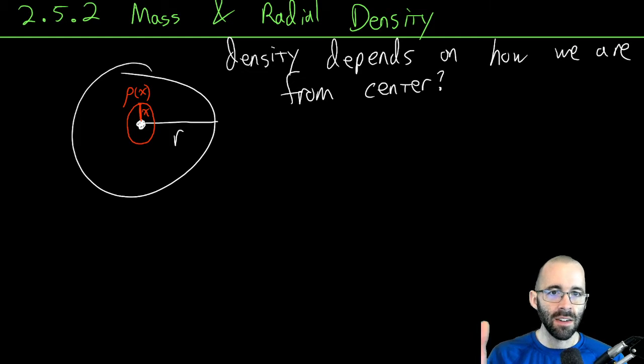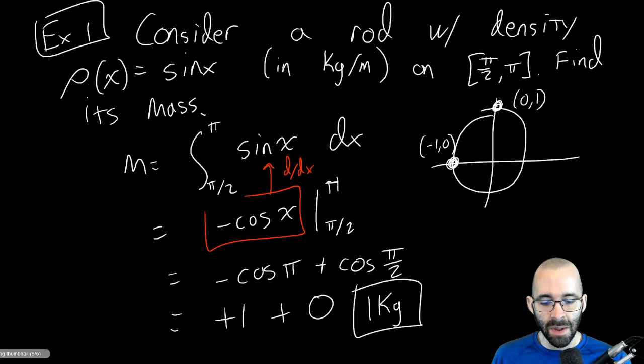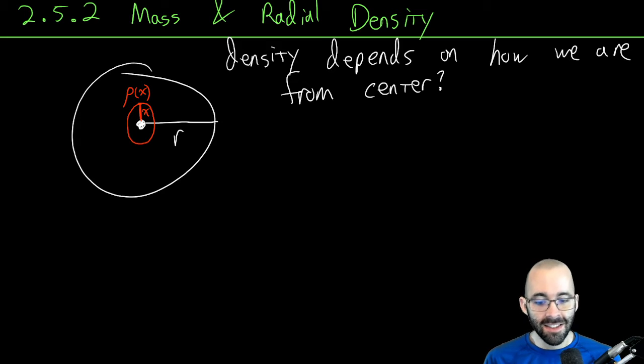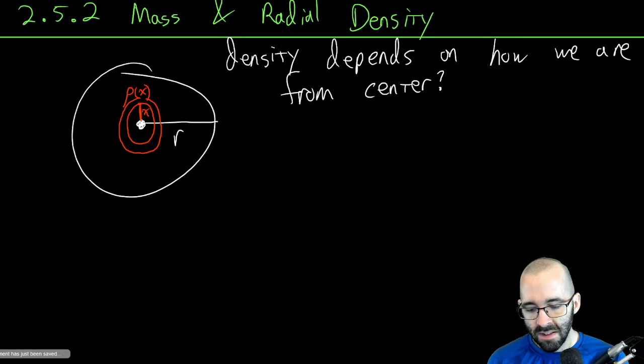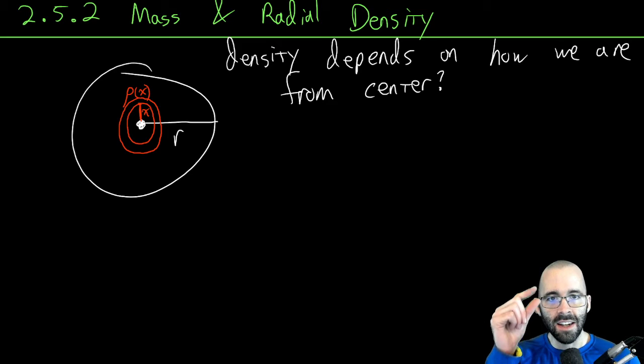If we want the total mass, the mass is density times length for one dimension, density times area in two dimensions. So we're in two dimensions now. How do we find little pieces of area that we can use to approximate?